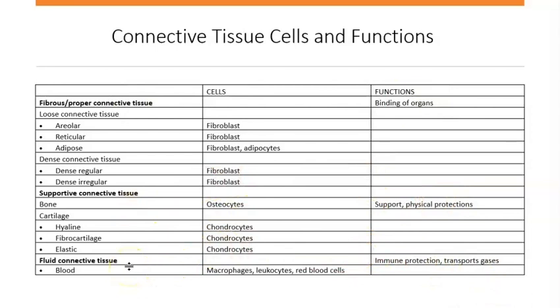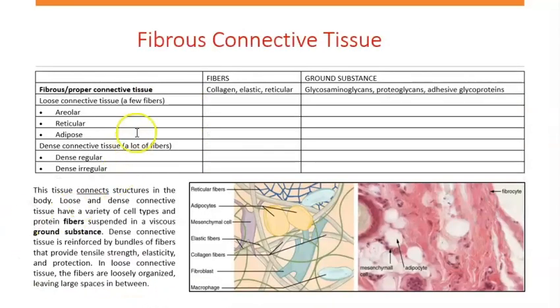Tissues are made of cells, so therefore we are supposed to find multiple different types of cells. You have fibroblasts, found in the fibrous tissue. You have macrophages in blood, leukocytes also in blood, and cells in fibrous connective tissue.